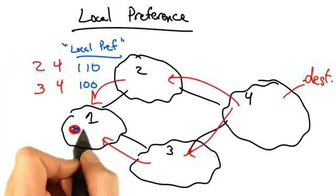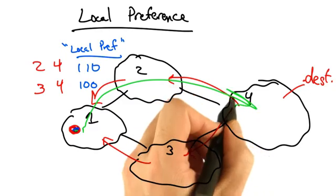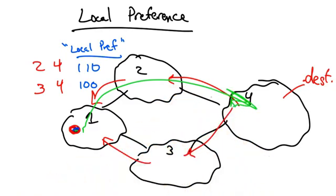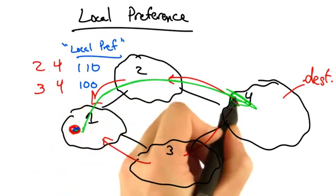This results in this router selecting the route through AS2 and sending traffic to the destination in AS4 via AS2.